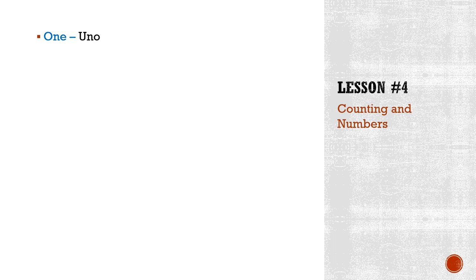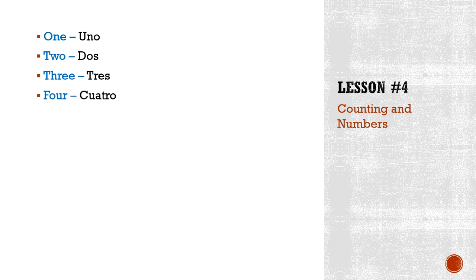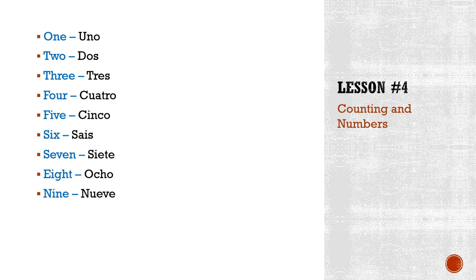Before we delve into the translation of the numbers, there are two conventions used when translating numbers. The first is an influence of Spanish colonization, so the translation is more Spanish sounding. For example: one is uno, two is dos, three is tres, four is cuatro, five is cinco, six is seis, seven is siete, eight is ocho, nine is nueve.